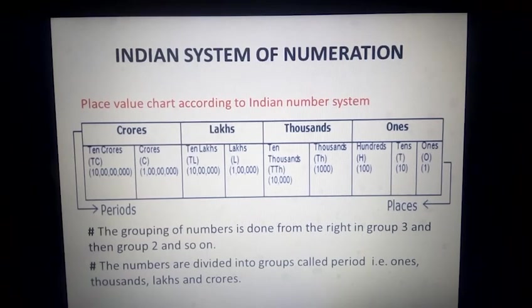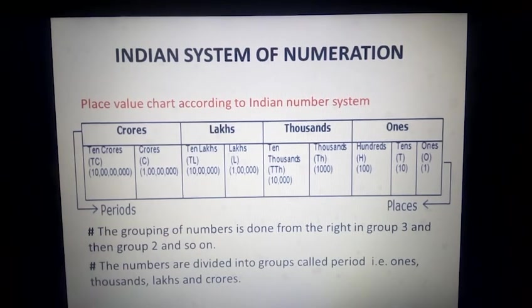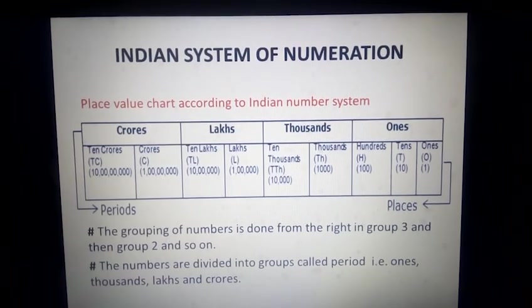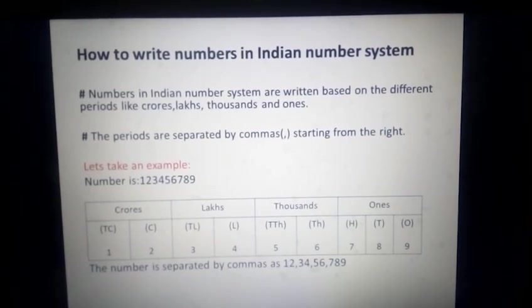So we see that if we start from the right corner, we start grouping the number from the right corner: first three digits, and then again two digits, and two digits, and so on. This is how we actually represent a number in the Indian system of numeration, and you must be very aware about it.